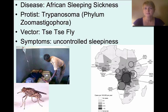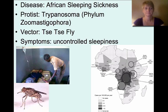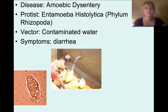African sleeping sickness is caused by a protist called Trypanosoma in the phylum Zoomastigophora. It's transported through the tsetse fly, which bites people and passes on this protist. It builds up in the bloodstream and causes uncontrolled sleepiness — the person lies down and goes to sleep, stops eating and drinking, and many people die from this. It is very common in Africa, and the map shows quite a few regions where it causes a lot of deaths.